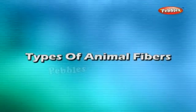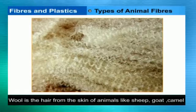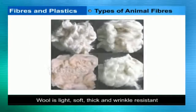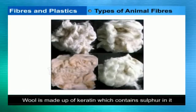Types of Animal Fibres. Wool is the hair from the skin of some animals like sheep, goat, and camel, which is twisted to make long strands. Wool is light, soft, thick, and wrinkle resistant. It is made up of keratin, which contains sulphur.